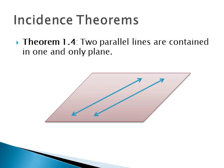The fourth is two parallel lines are contained in one and only one plane. Same idea, just different kind of lines. If I have two parallel lines, regardless of how they are in space, one plane can go through both of them.